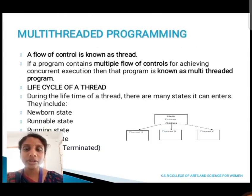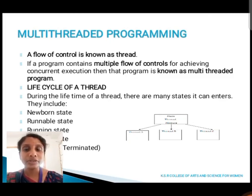Next we are going to discuss about multi-threaded programming. A flow of control is known as a thread. If a program contains multiple flows of control, it is called multi-threaded programming. The life cycle of a thread has the following states: newborn state, runnable state, running state, blocked state, and death state.